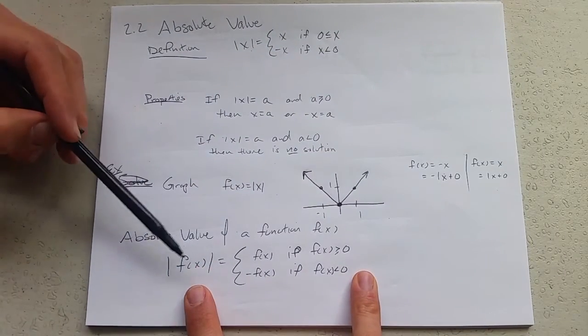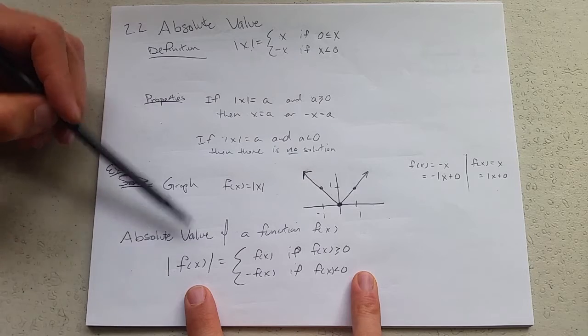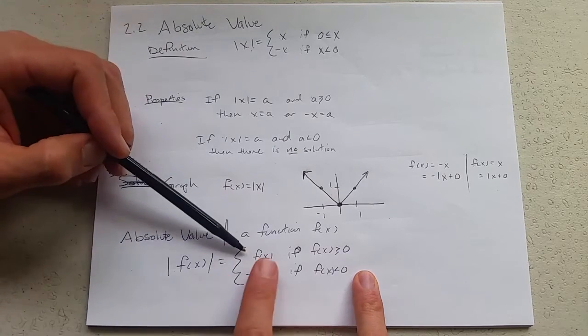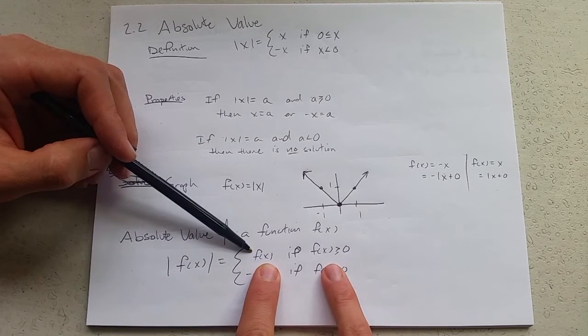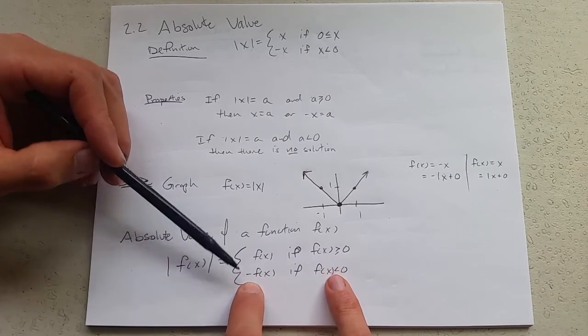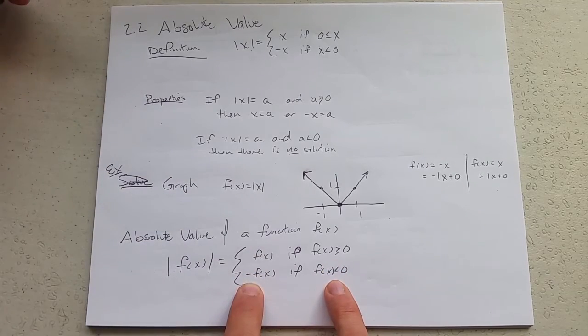How do we deal with absolute values of functions? Exactly the same way we dealt with absolute value of x. This is regular f of x if it was already positive and negative f of x if f would be negative.